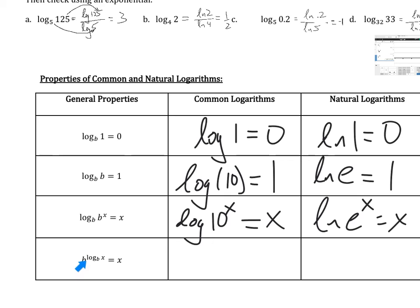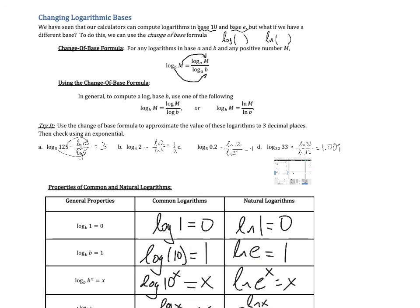And here again, these cancel each other out, b to the log base b of x. So these two bases are the same, then they cancel, and we're left with x. So if we have 10 to the log of x, they're both base 10 there. The log is base 10, and the power is base 10, so they cancel each other out. Or, if we have e to the natural log of x, those cancel each other out and give us x. Some things that will show up a little bit here as we go through these. Those are the properties of common logs and natural logs.